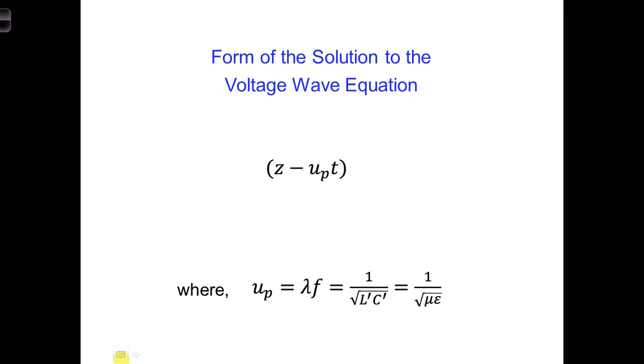Whenever you have a wave equation in any field of physics, the form of the solution for a wave propagating in the positive z-direction is z minus up*t. For example, if the source is a sinusoid, the solution to the voltage wave equation would be of the form sine(z minus up*t). up here is the phase velocity. I'll say more about that in just a minute.